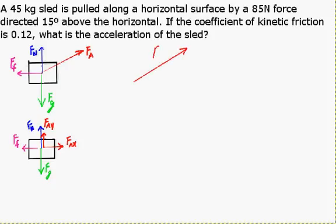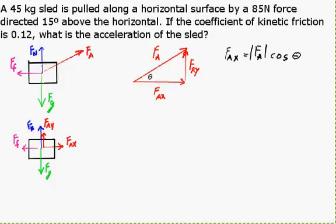The applied force is at a 15-degree angle. We can say that F_ax, the horizontal part of the applied force, is the magnitude of the applied force times cos of 15 degrees. This gives us a horizontal component of 82 Newtons.